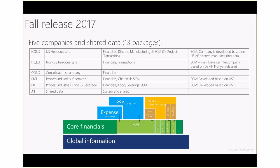The next two companies are process industry companies — one for chemicals (PICH) and one for food and beverage (PIFB). Their financials are nearly identical to HQ US, with a couple of minor differences we're working to fully align. The supply chain team took the existing USPI and USP2 companies and converted them to sit on top of the financials we created, giving you process-industry-specific supply chains.